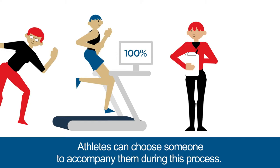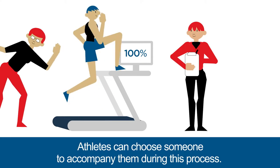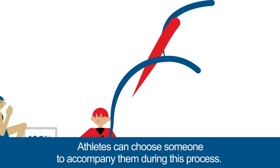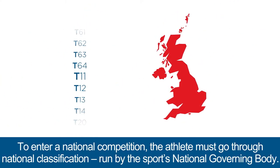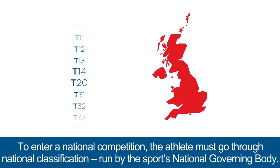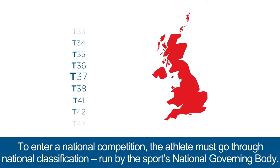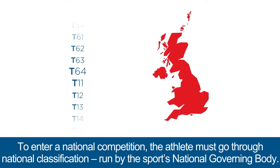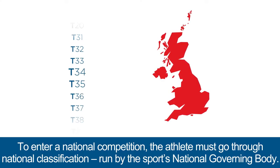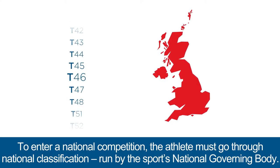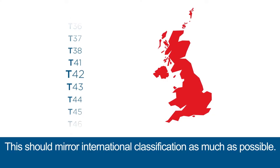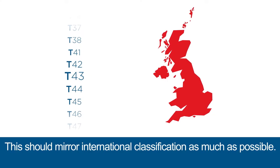Athletes can choose someone to accompany them during this process. To enter a national competition, the athlete must go through national classification, run by the sport's national governing body.